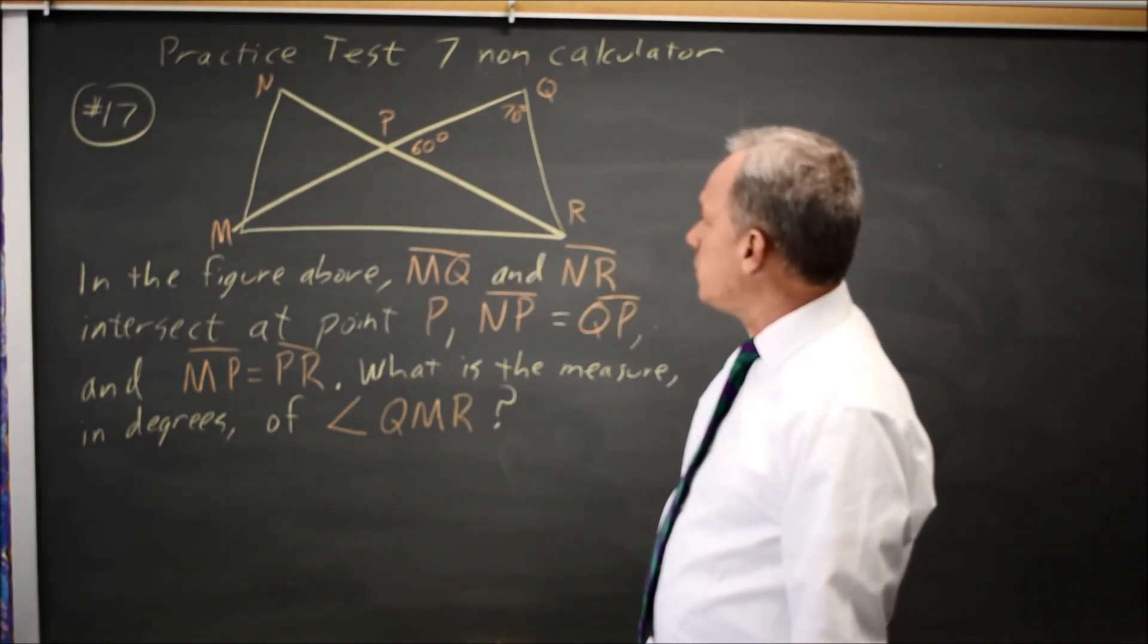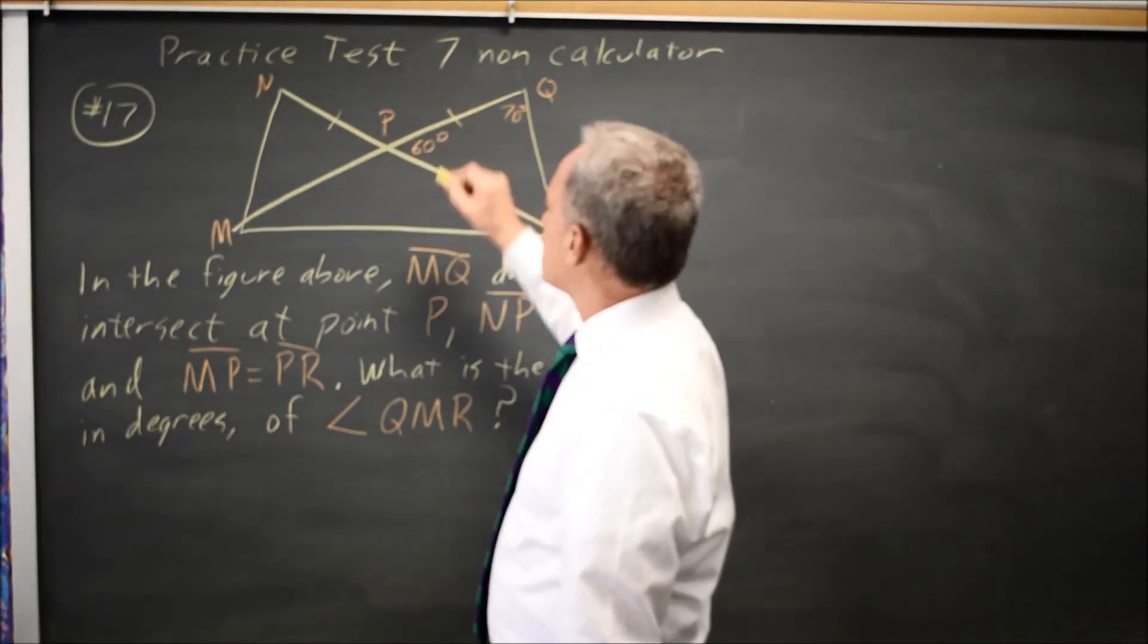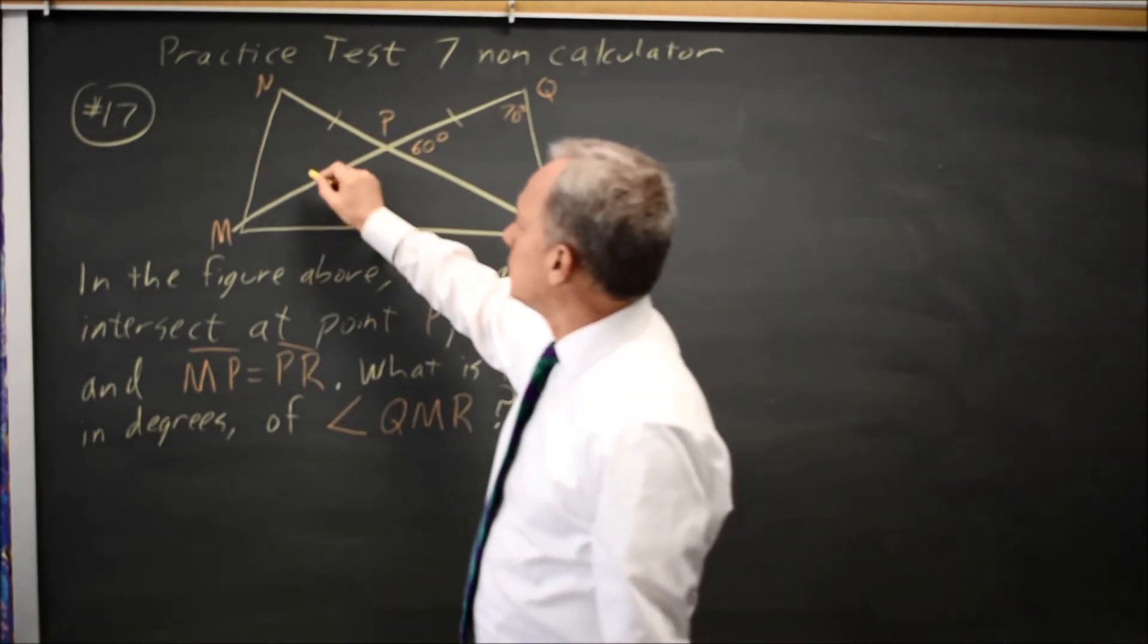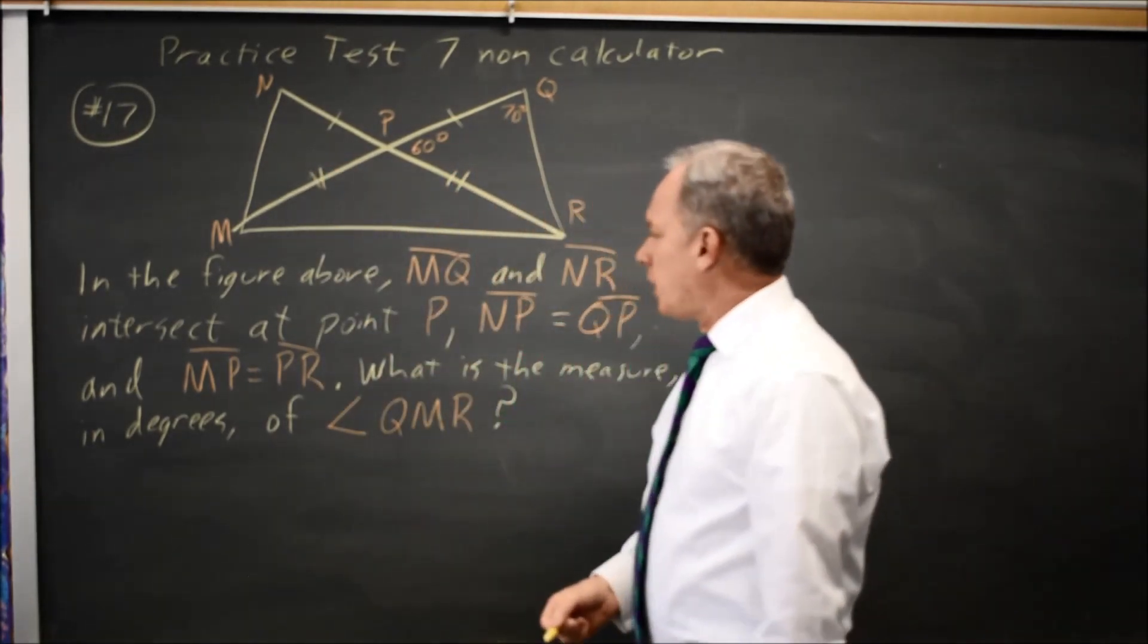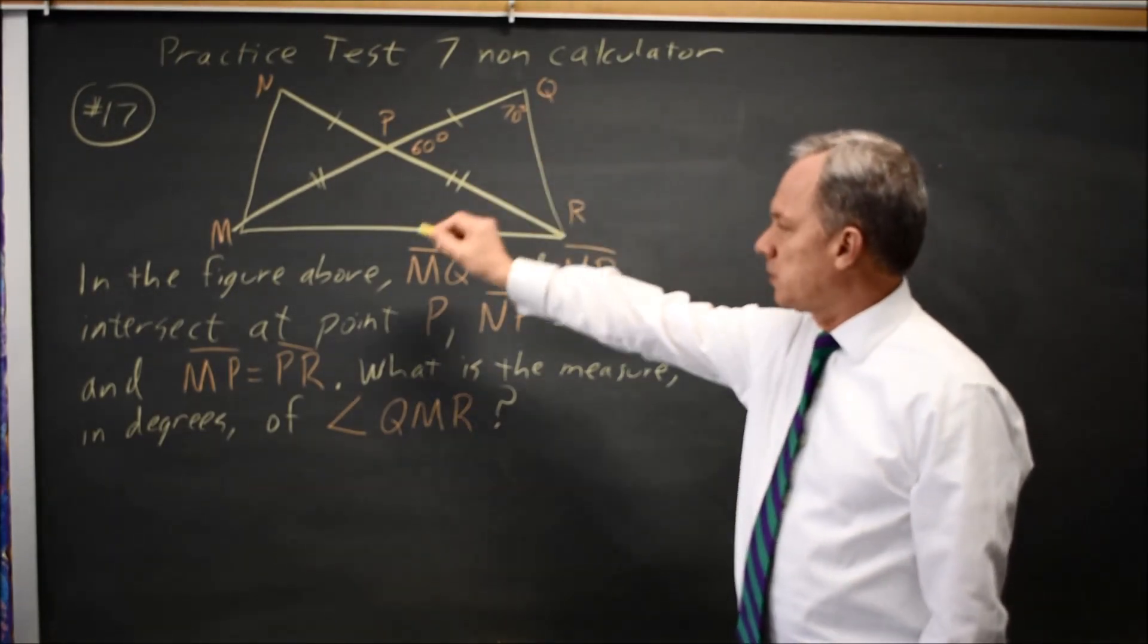NP equals QP, so these two sides are equal. MP equals PR, so these two sides are equal. And they want the measure in degrees of angle QMR.